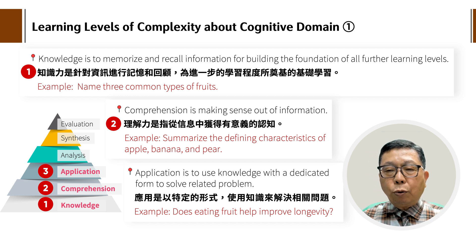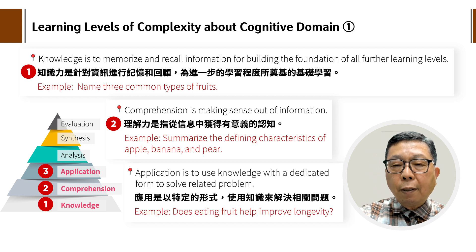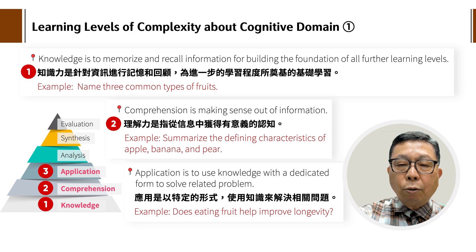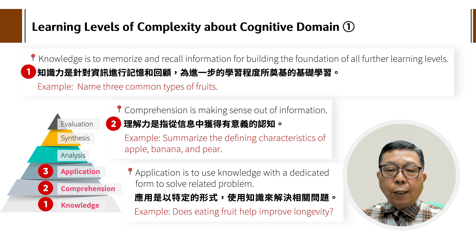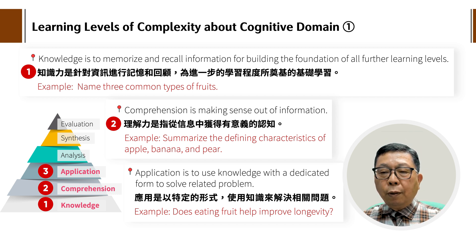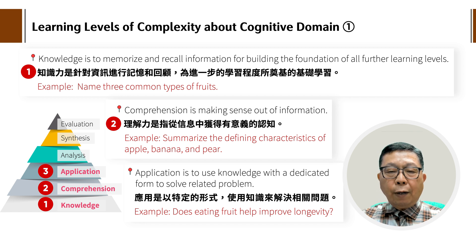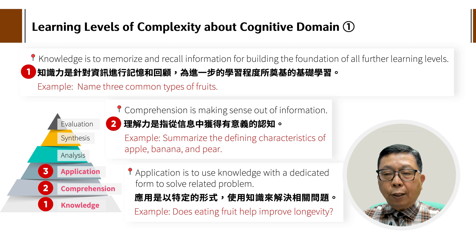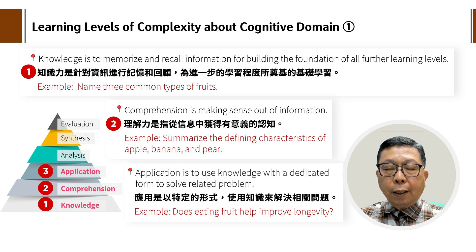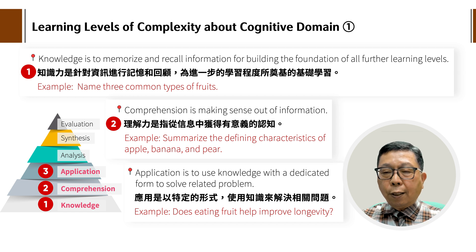第二点就是Comprehension（理解），是从信息中获得有意义的认知，就是make sense out of information。举例是：summarize the definition and characteristics of apple, banana and pear，就是你把这些水果的特质整理出来。